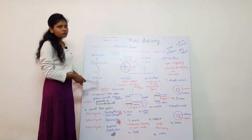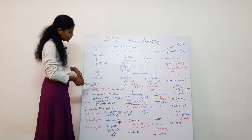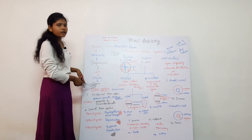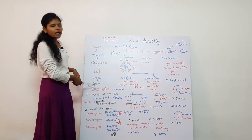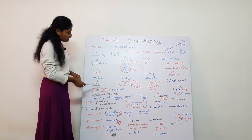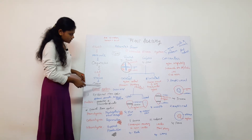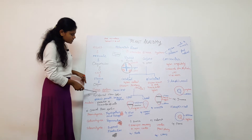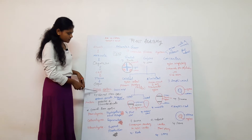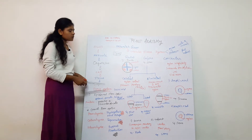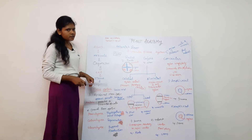For example, the heart and lungs are organs in animals. In plants, these structures form the tissue system. What do we call it? This is the tissue system.